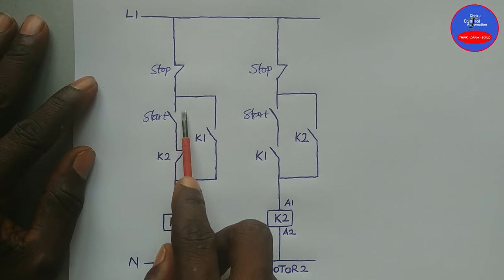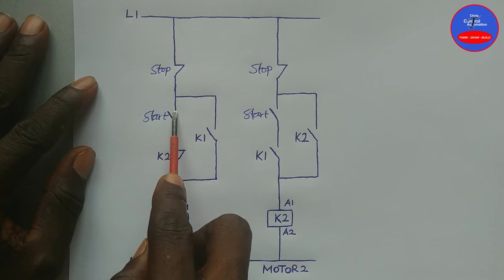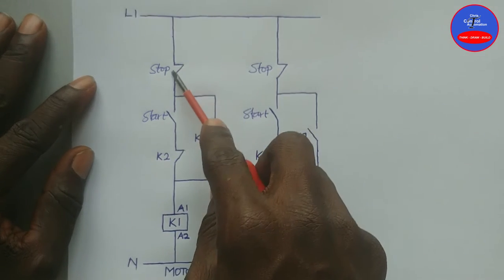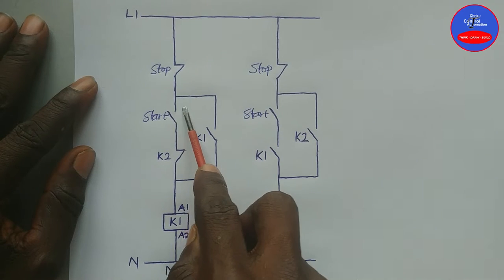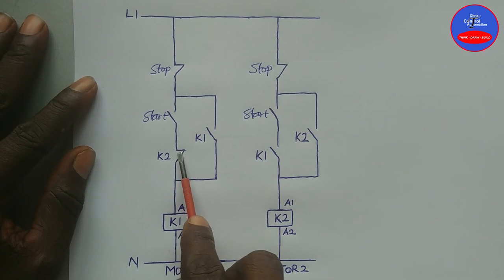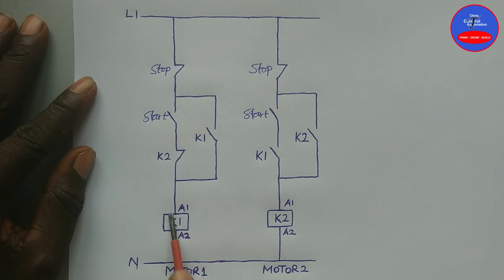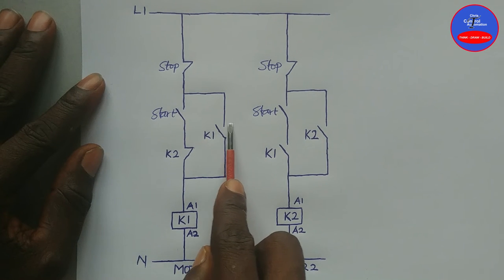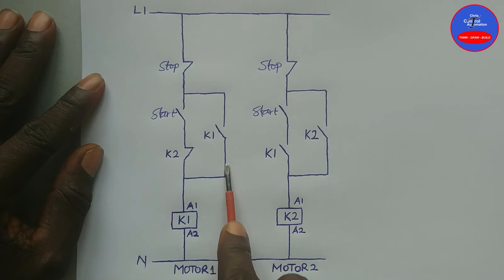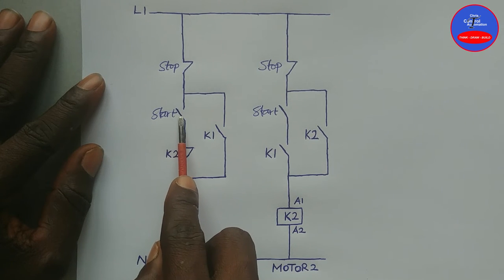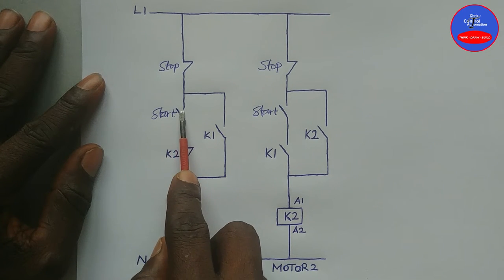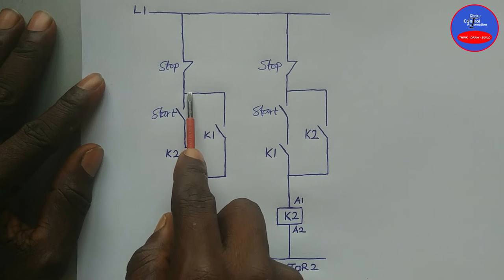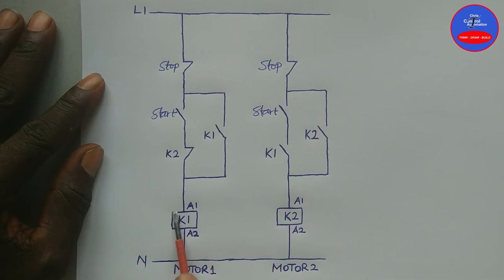Now let me come back to Motor 1's circuit. When you press on the start button it becomes closed, therefore current can flow through this close contact, through this close contact, through this close contact on Contactor 2 to energize Contactor 1. When Contactor 1 energizes, this open contact will close to serve as a hold-on, so that when we remove our hand from the start button and it opens, current can still flow through this close contact on K1 to maintain K1 in the energized state.